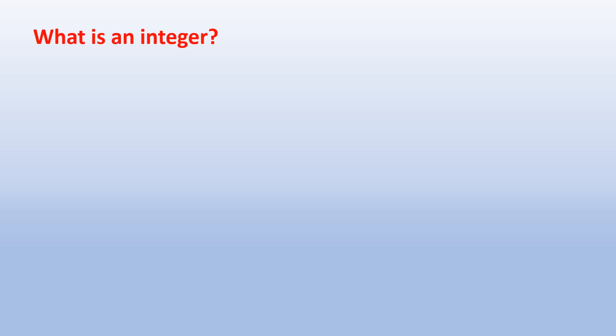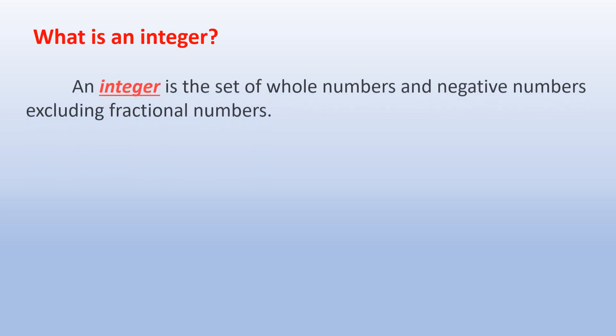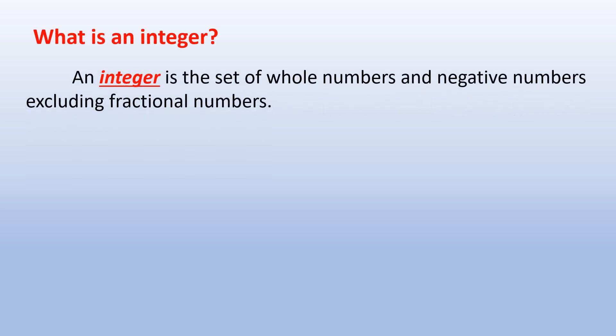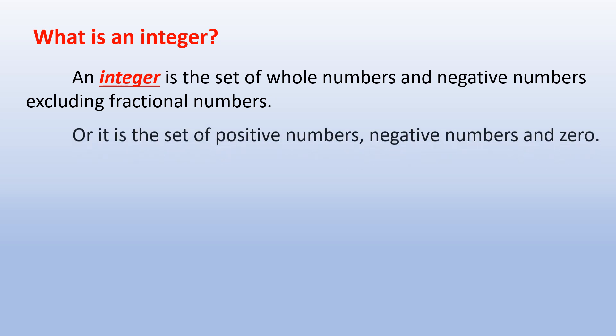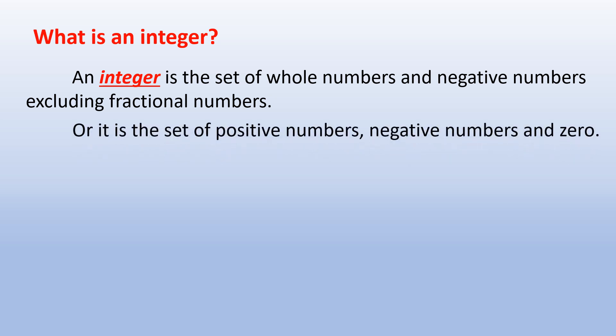What is an integer? An integer is a set of whole numbers and negative numbers excluding fractional numbers. Or it is a set of positive numbers, negative numbers, and 0.